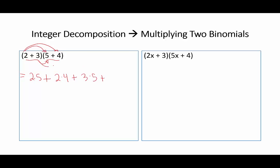and 3 times 4, we get 10 plus 8 plus 15 plus 12, which is equal to 45.